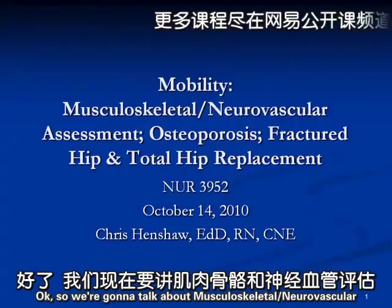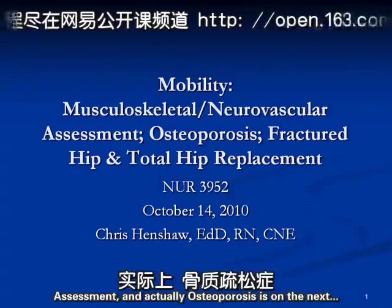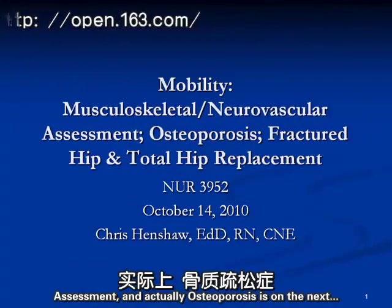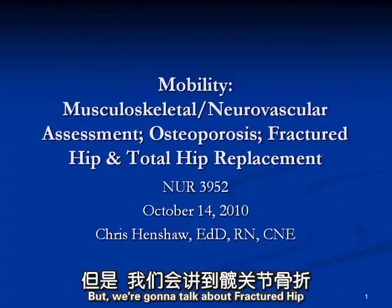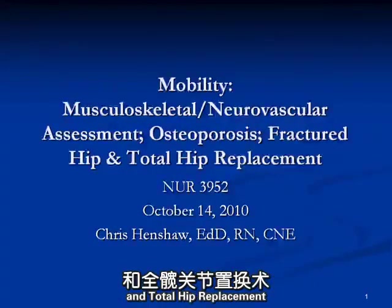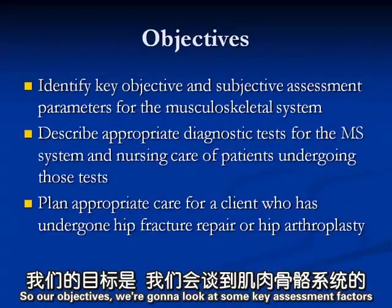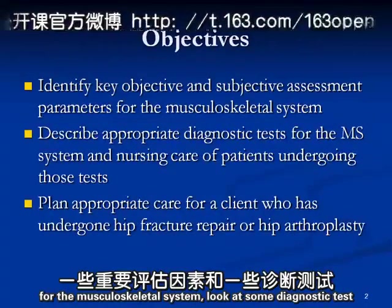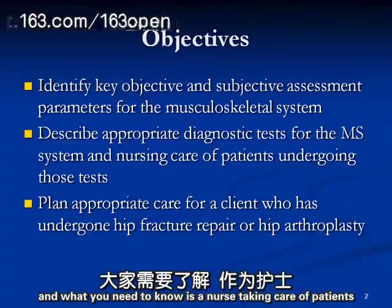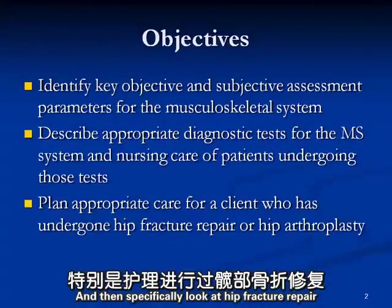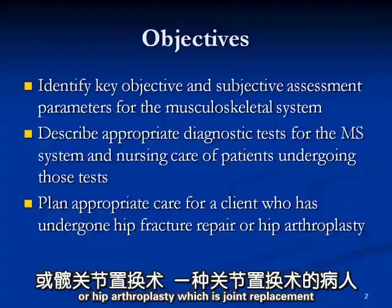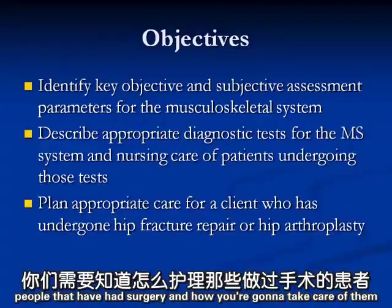We're going to talk about musculoskeletal neurovascular assessment. Osteoporosis is in the next section, but we're going to talk about fractured hip and total hip replacement. Our objectives: we'll look at key assessment factors for the musculoskeletal system, diagnostic tests, what you need to know as a nurse caring for patients having those tests, and specifically hip fracture repair or hip arthroplasty, which is joint replacement.